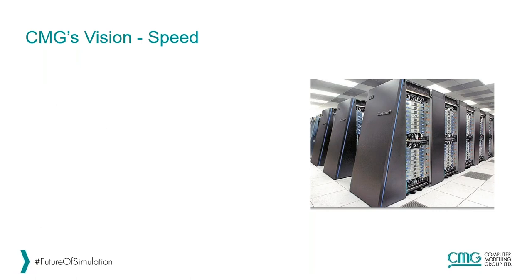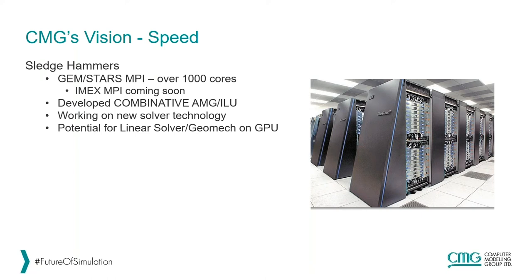Within the idea of speed, CMG has certain sledgehammer approaches. In our 2020 release, we have MPI versions of both GEM and STARS simulators — actually a hybrid, using OpenMP within an individual node and MPI across nodes. We have run STARS and GEM models quite happily over 1000 cores on large clusters, mainly on the cloud. CMG doesn't want to invest in thousands of additional cores not used daily — these things can be easily accessed through the cloud or through your own HPC clusters. IMEX MPI doesn't currently exist, but it should be coming soon — hopefully in 2021 we'll see IMEX MPI hitting the streets.